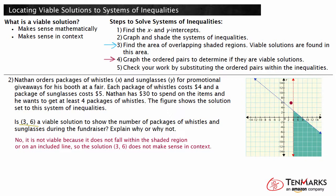It is important to remember that even when a point falls within the overlapping region on a coordinate plane, if context is provided it must apply to the context as well. A viable solution is a solution to a system of inequalities that makes sense both mathematically and based on the context. Now you know how to locate viable solutions of inequalities graphically. Thanks for watching!